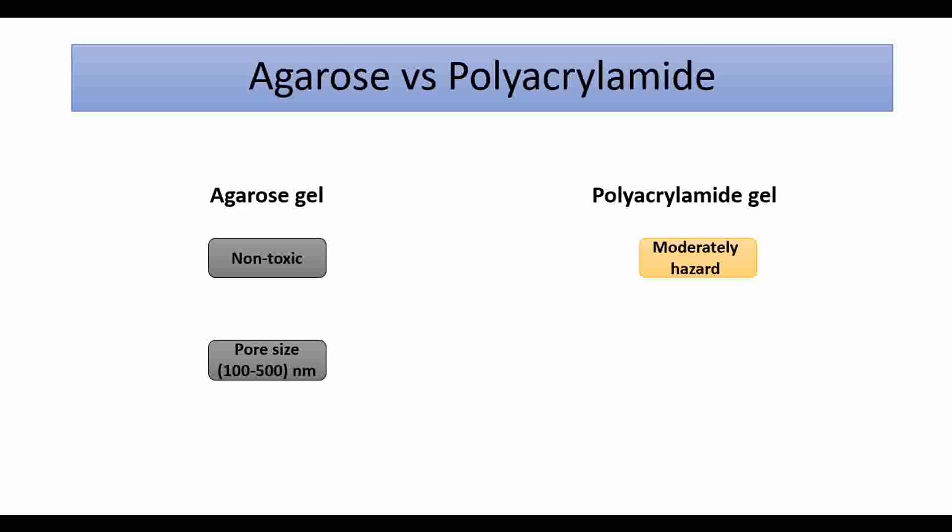On the other hand, polyacrylamide gel is one large molecule and has a smaller pore size from 10 to 200 nanometers in diameter. This makes agarose gel more appropriate for larger molecules like DNA, which has a greater size, and polyacrylamide more convenient for proteins because it provides good resolution and great separation. Polyacrylamide gel can also be used for DNA in some techniques.